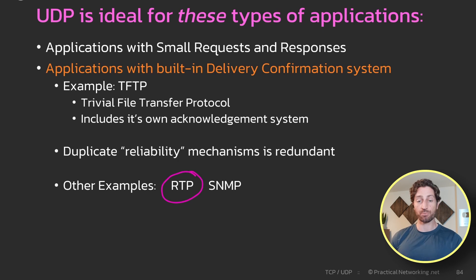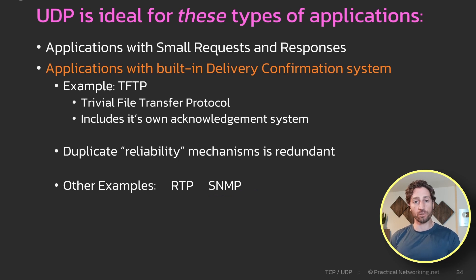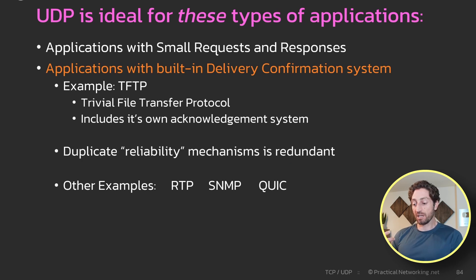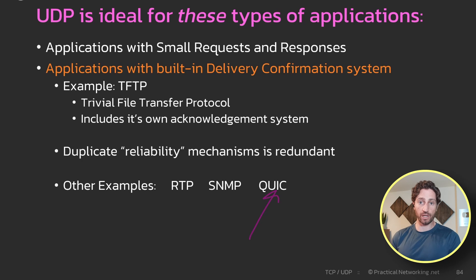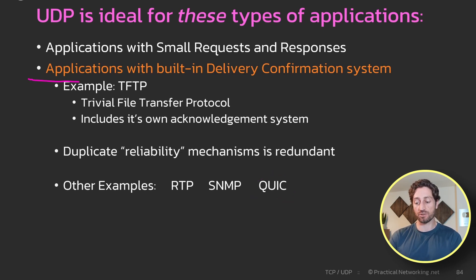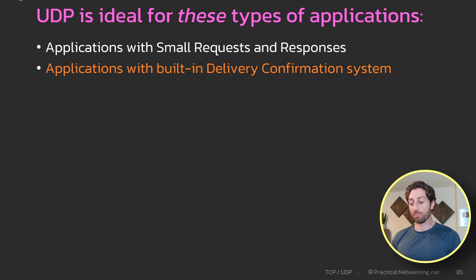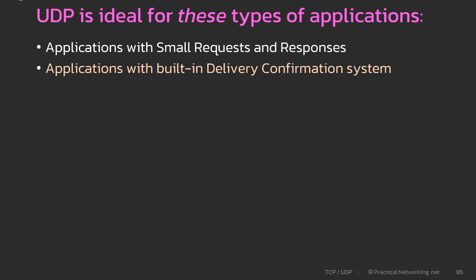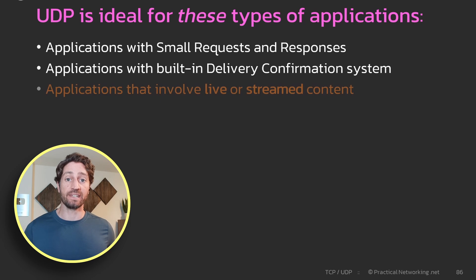TFTP is just one example — there are many others. RTP, or the Real-Time Transport Protocol, also has its own delivery confirmation system built into the application. So does SNMP. One more worth drawing attention to is QUIC. QUIC is sort of the evolution of TCP — redoing all the cool things of TCP in a modern way, accounting for all the lessons learned about TCP over the last 40 years. Since QUIC has its own delivery confirmation system, there's no reason to run QUIC over TCP — that's why QUIC is done over UDP.